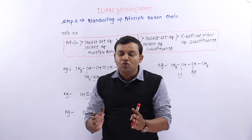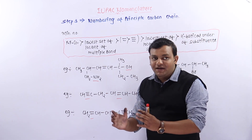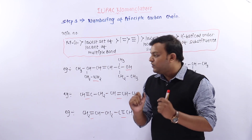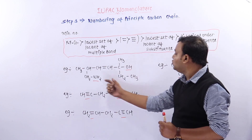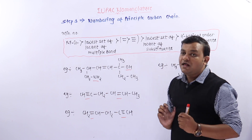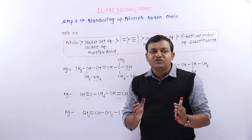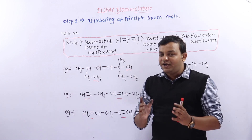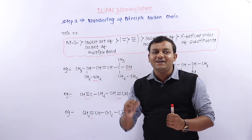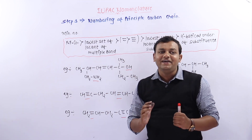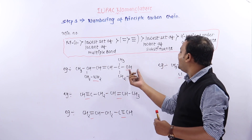इन्हें हम example के through समझते हैं। First example में पहली step: selection of principal functional group। यहाँ पर दो functional groups हैं — एक OH है (alcohol) और दूसरा NH2 है (amine)। Priority order में जो ऊपर आ रहा होगा वो principal functional group होगा — priority order में alcohol first आता है।